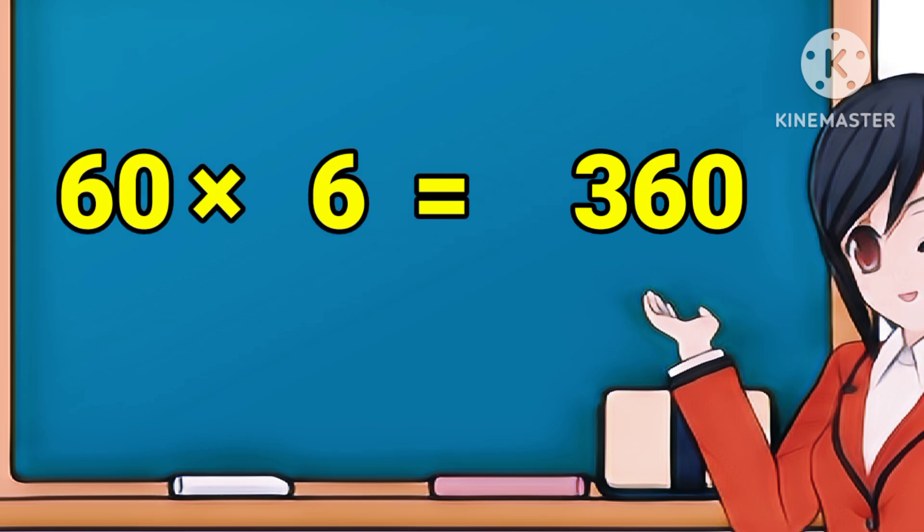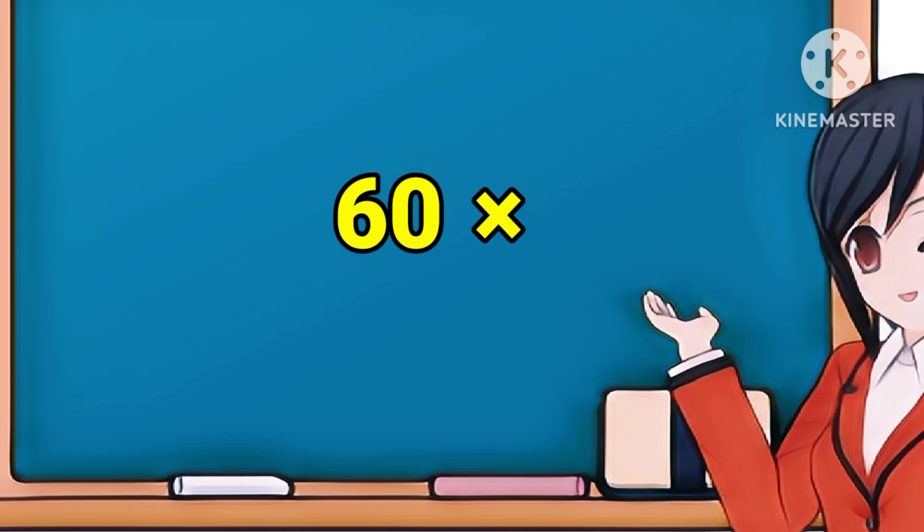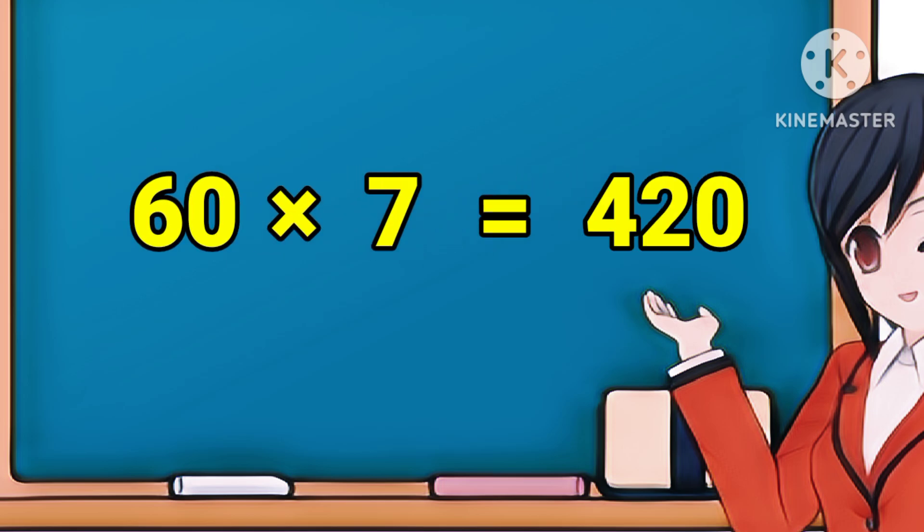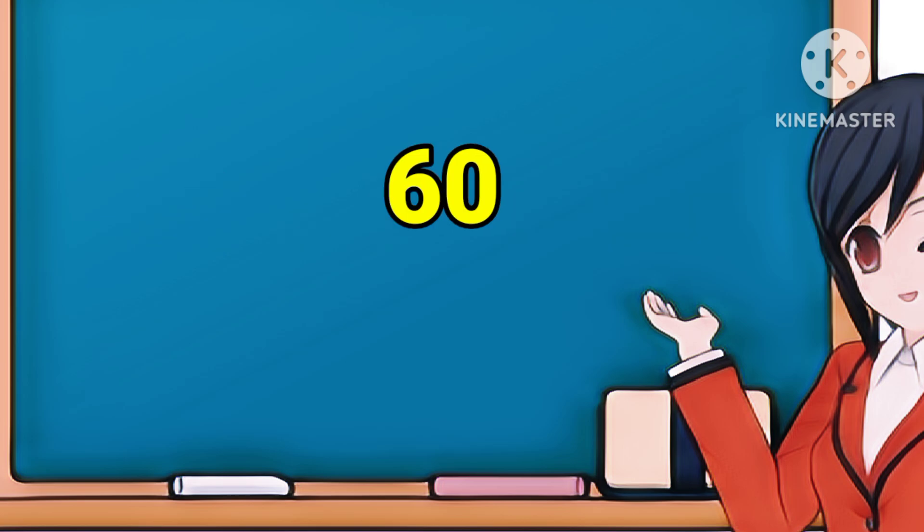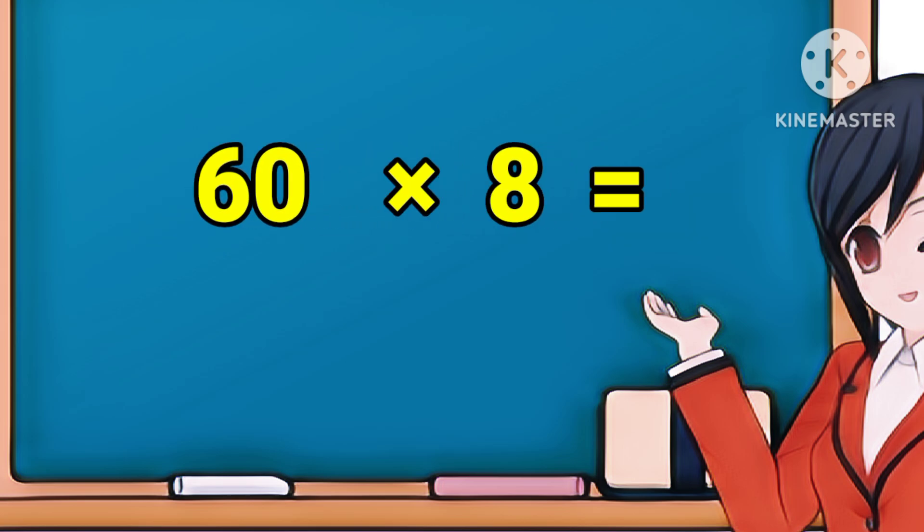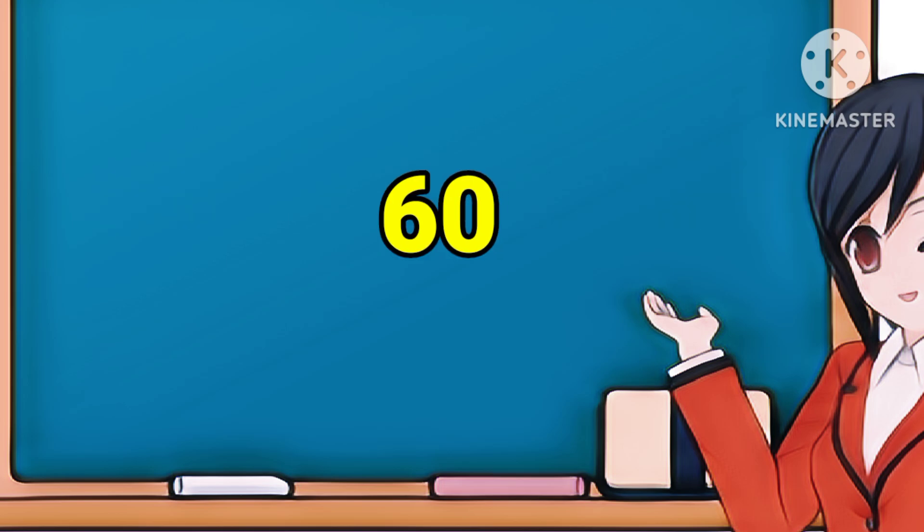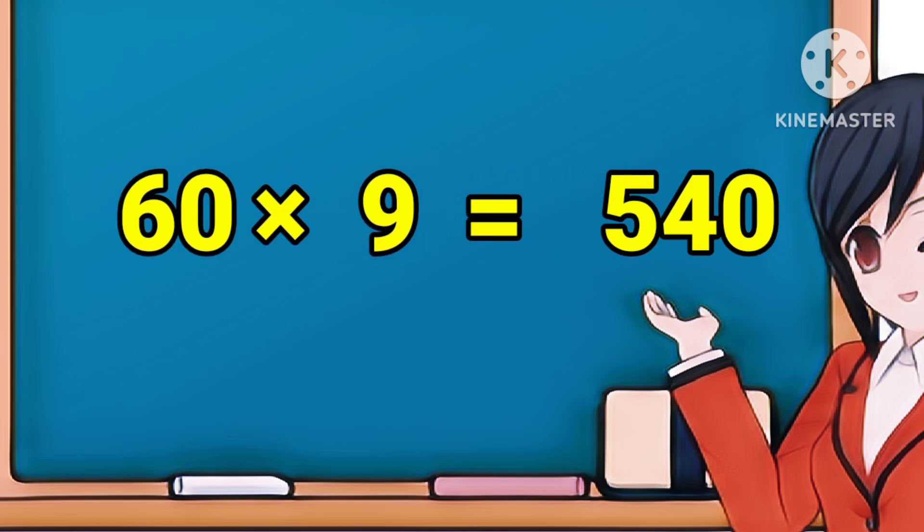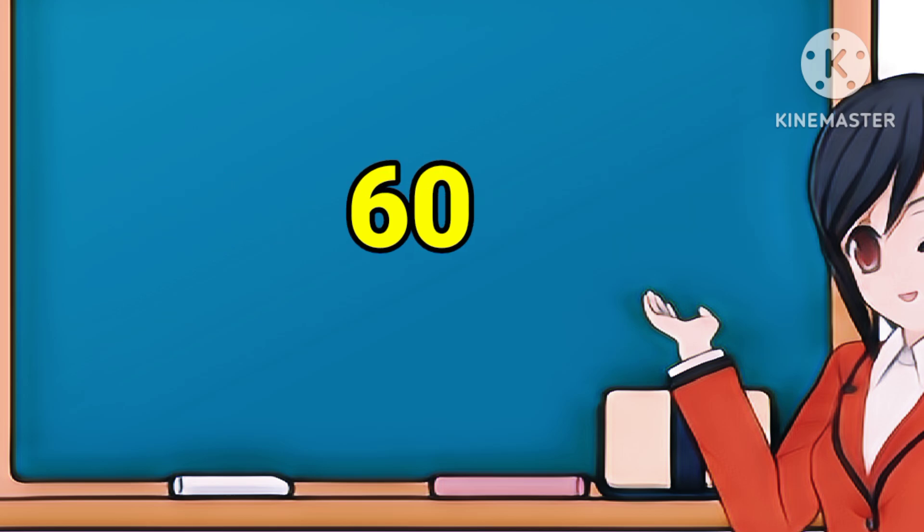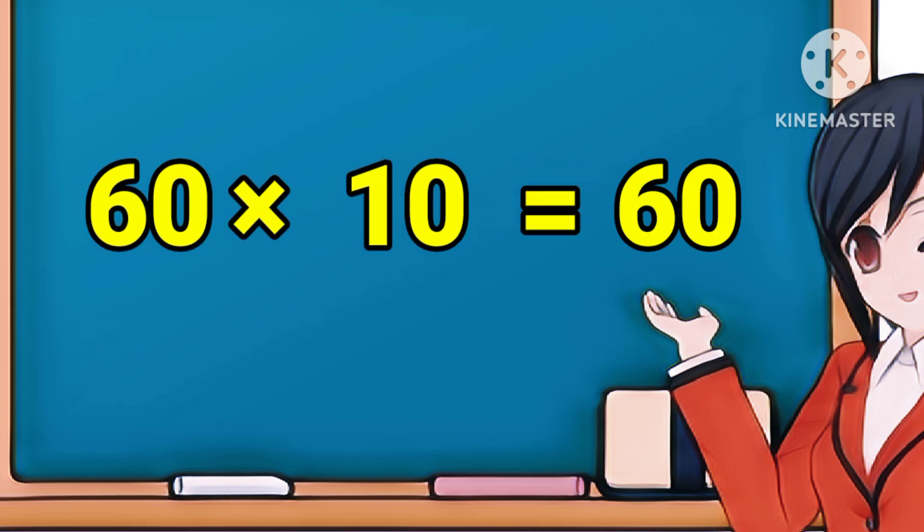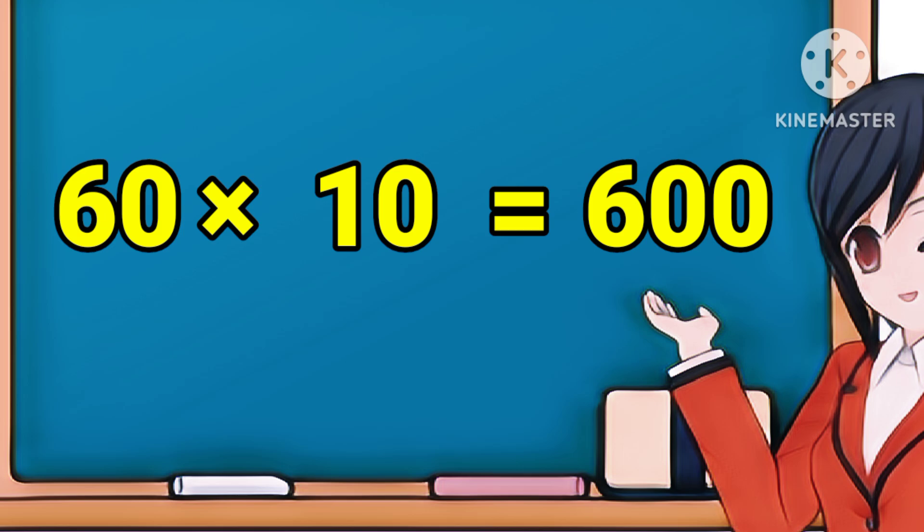66's are 360. 66's are 360. 67's are 420. 67's are 420. 68's are 480. 68's are 480. 69's are 540. 69's are 540. And 60 10's are 600. 60 10's are 600.